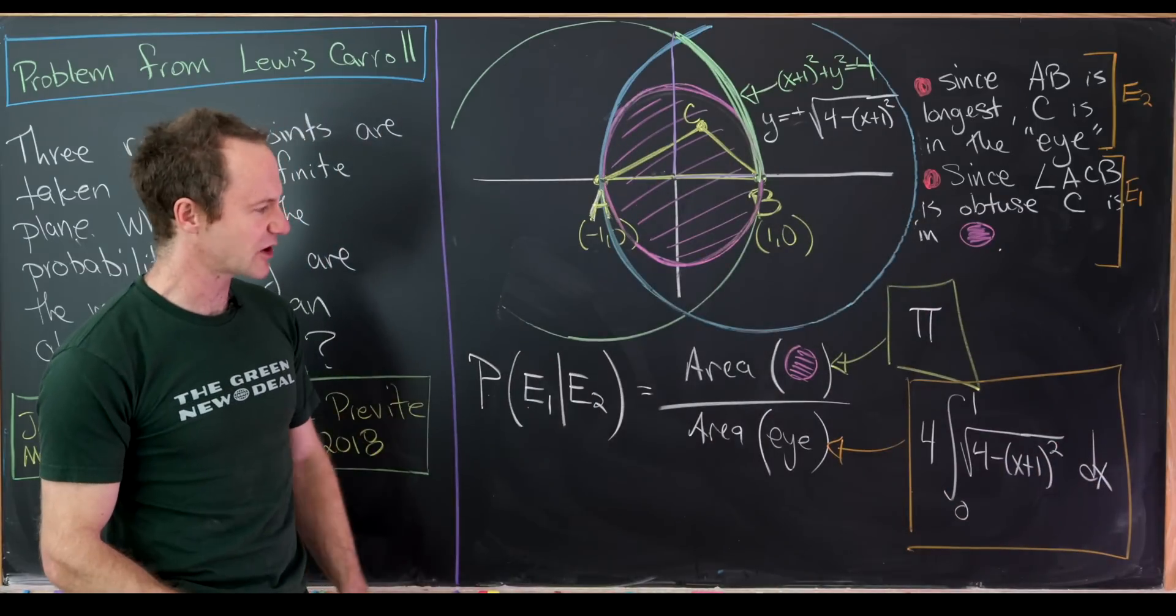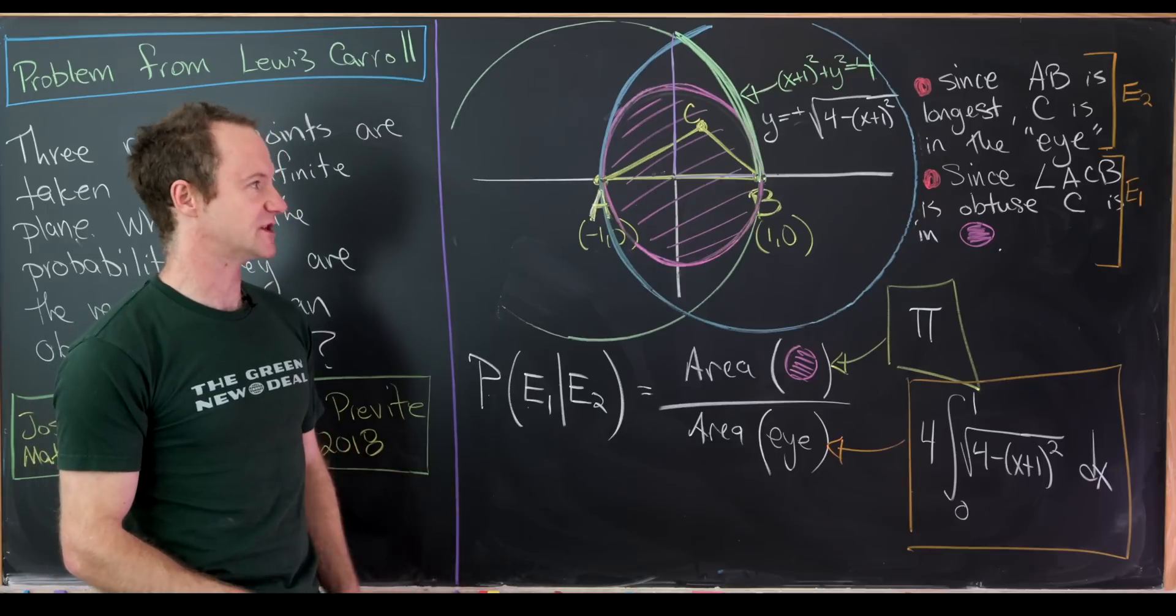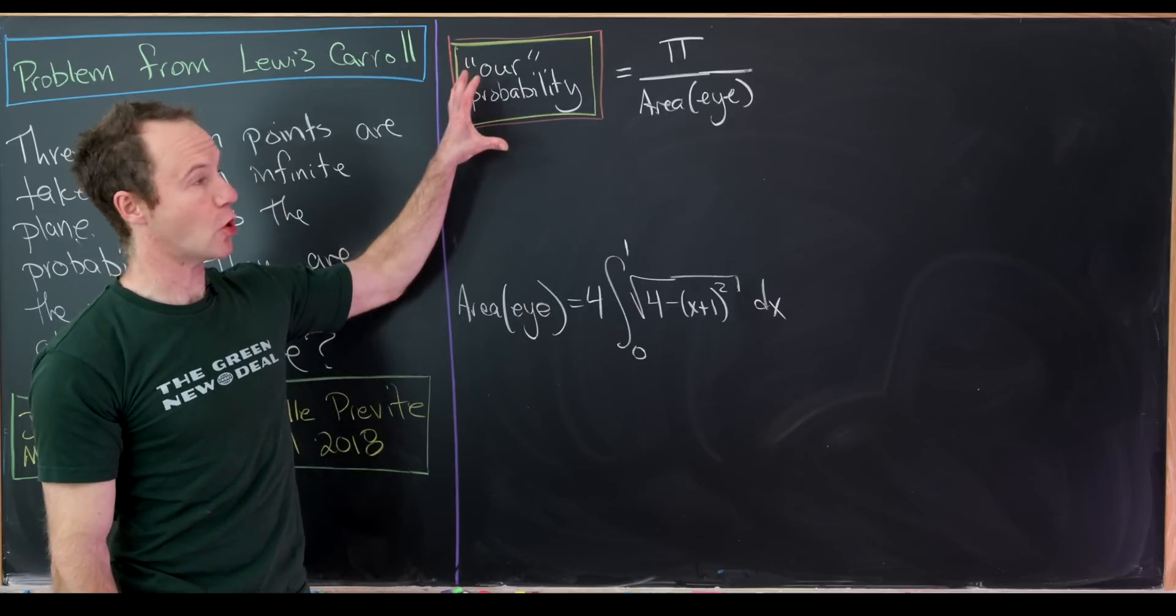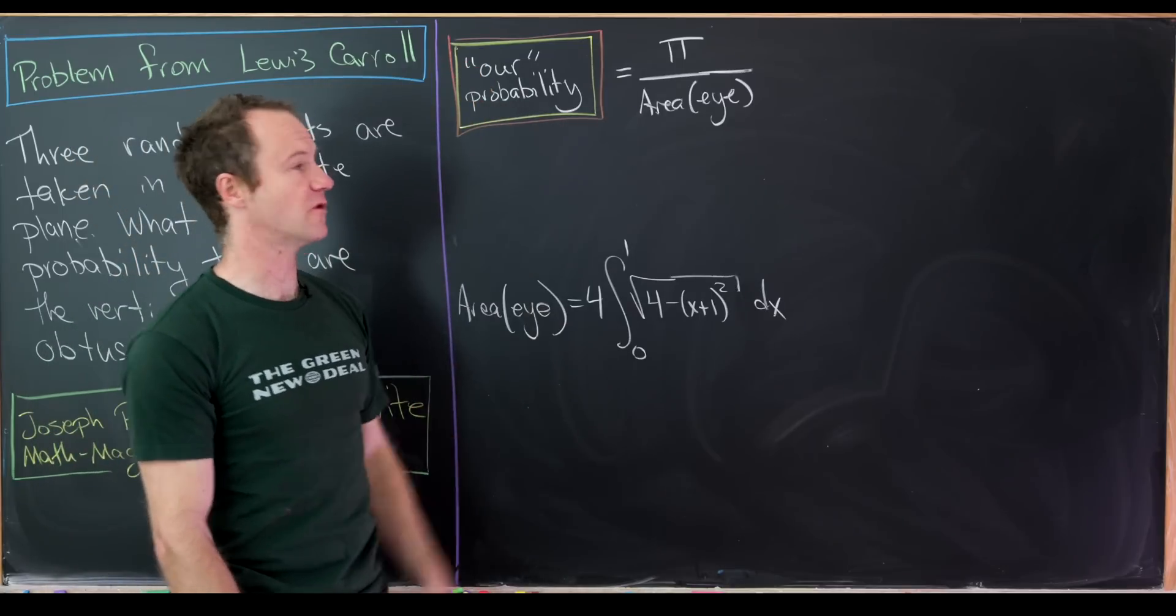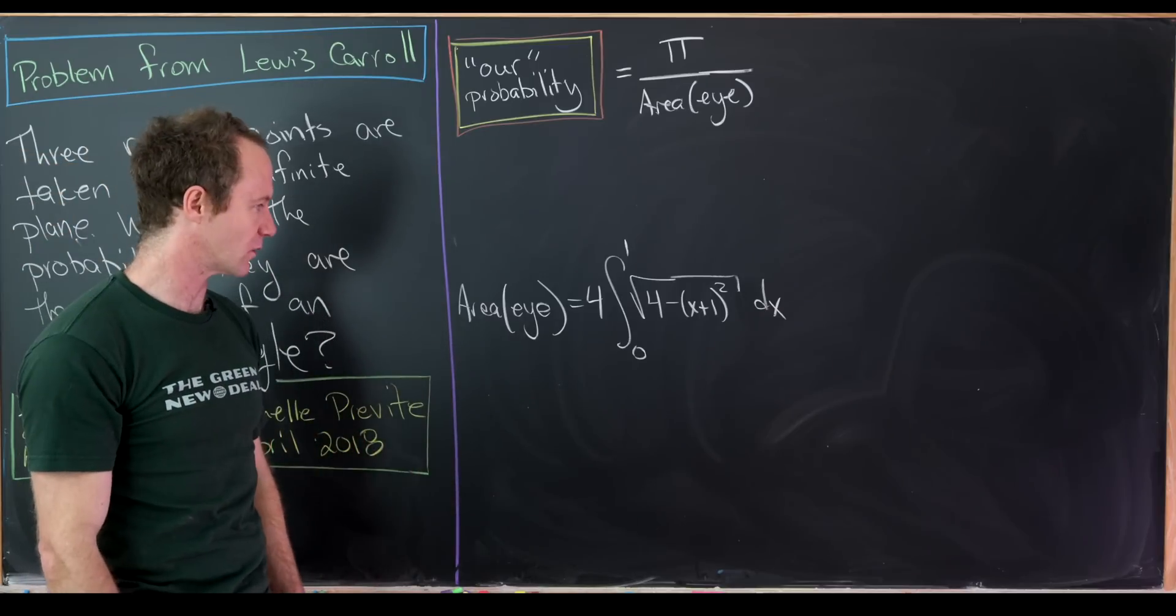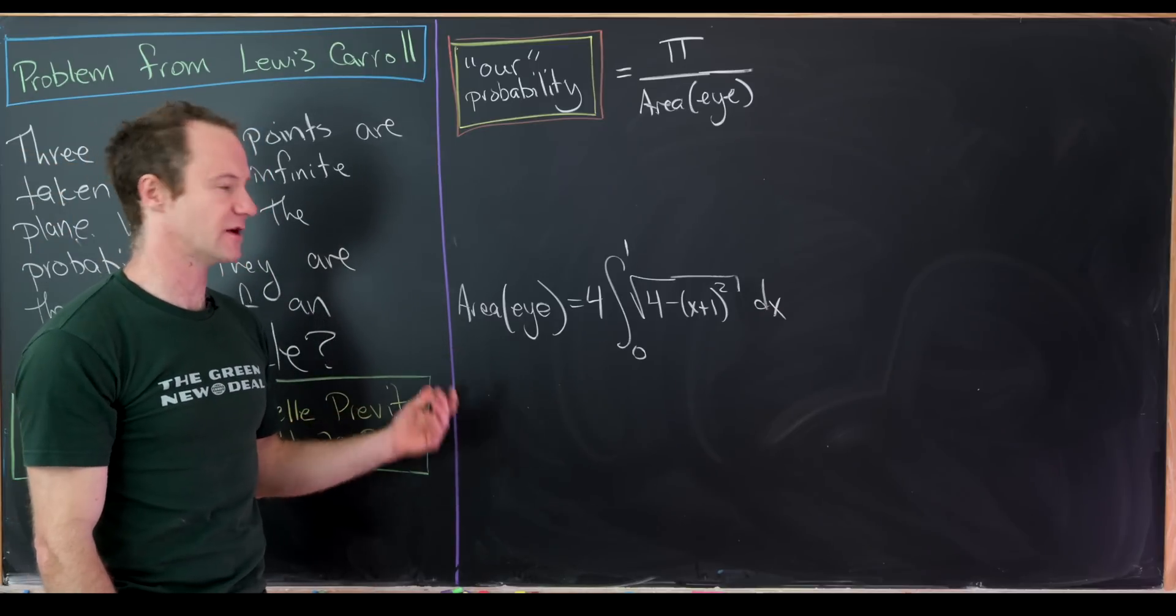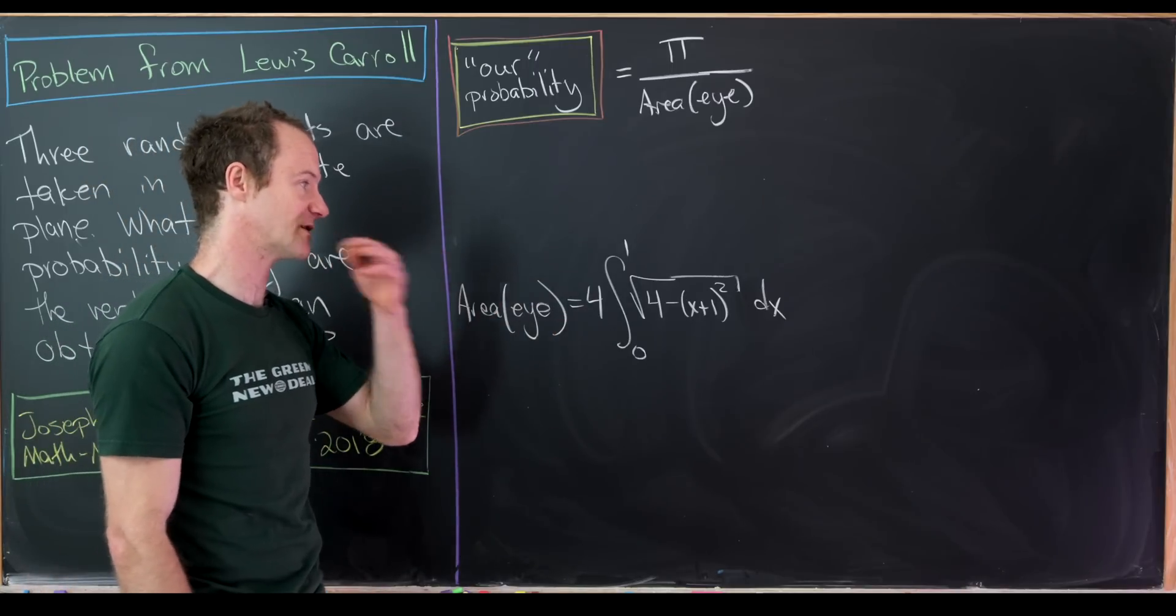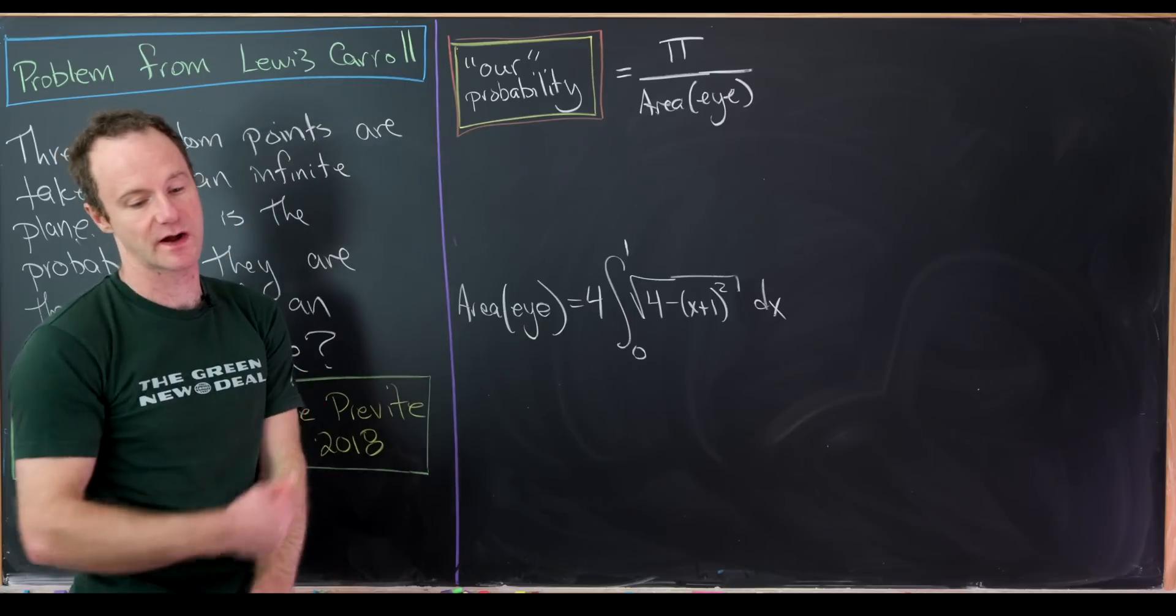So if we can calculate that integral, then we're good to go. So let's do that. Here's where we ended up. Our goal probability was pi over the area of the I that we had drawn on the last board. Then we wrote the area of that I in terms of an integral. It was 4 times the integral from 0 to 1 of the square root of 4 minus (x + 1)².